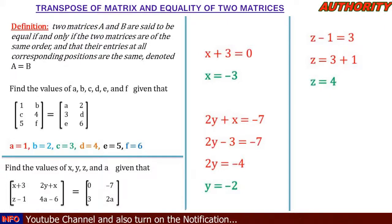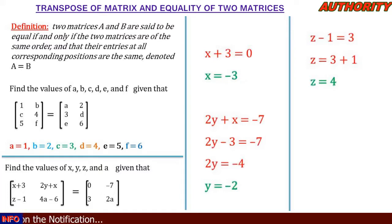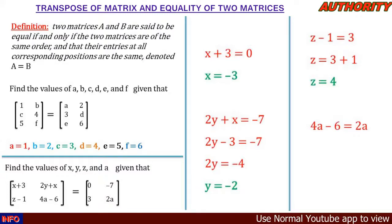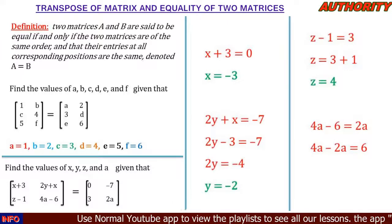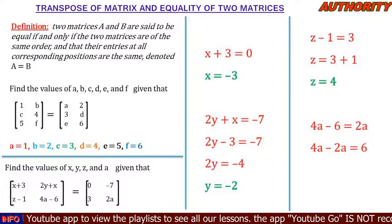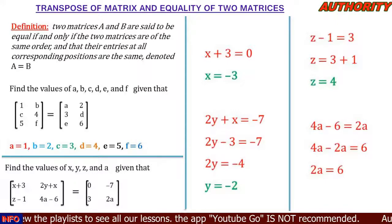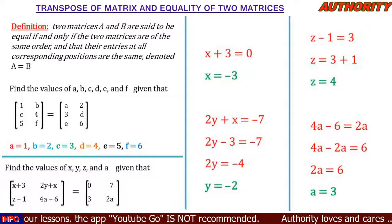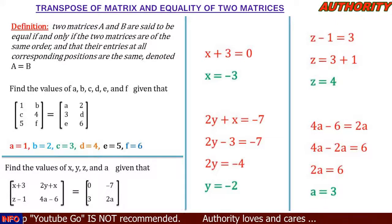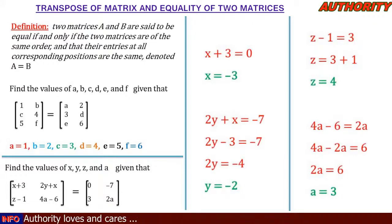For c22 (row 2, column 2): 4a - 6 = 2a. Taking 2a to the left side: 4a - 2a = 6, so 2a = 6, and a = 3. Therefore, x = -3, y = -2, z = 4, and a = 3. We have solved the problem. Please watch this gradually and try more examples.